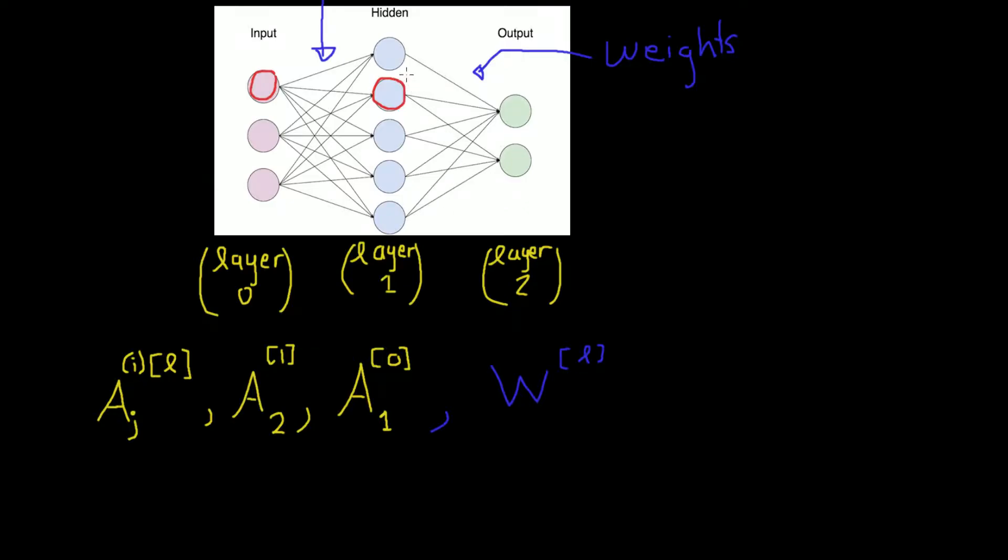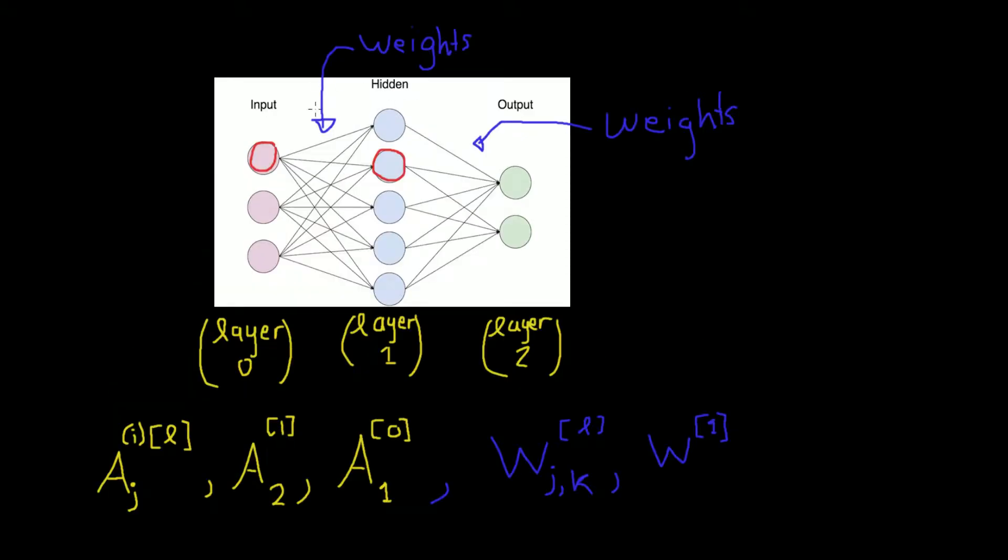We need to be careful because each node here has weights associated to every other node. So we need to specify from which node J to node K, specifically which edge we're referring to. Some examples might make this more clear. Let's say we have W of 1. What we refer to when we say W of layer 1, we mean the weights that connect layer 0 to layer 1. So we refer to these weights here.